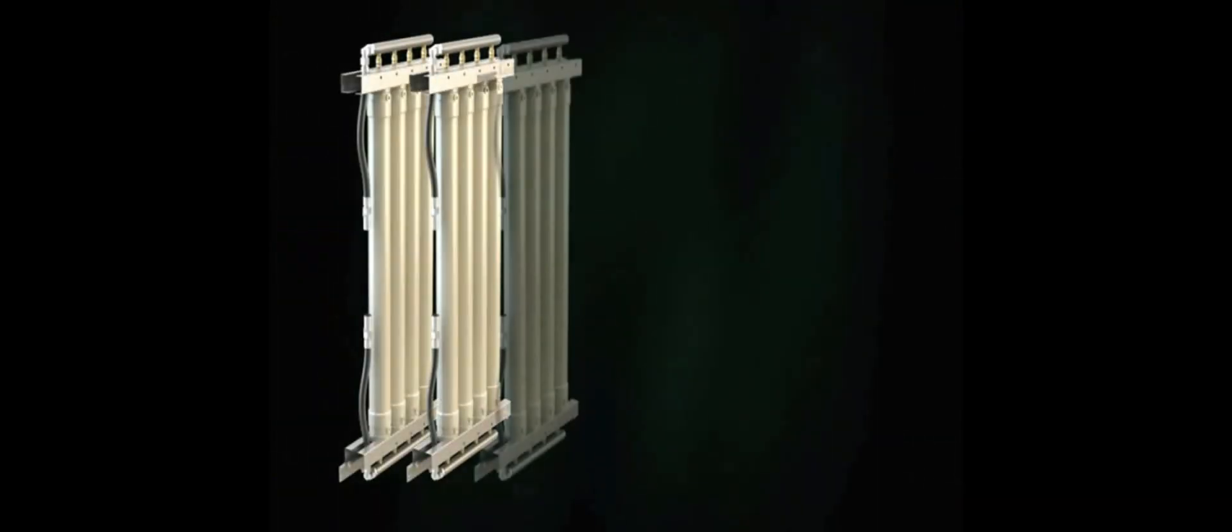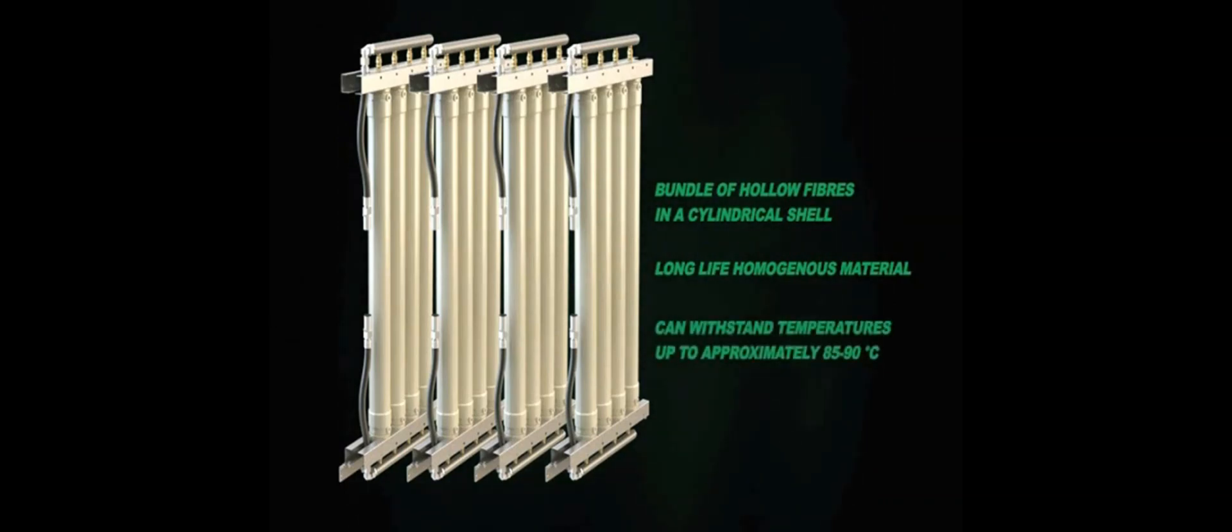Each membrane separator consists of a bundle of hollow fibers in a cylindrical shell. The fibers are made of a long-life homogeneous material. The membranes can withstand temperatures up to approximately 85 to 90 degrees Celsius without being damaged. But to avoid any potential overheating, the heater shut-down set point is 70 degrees Celsius.